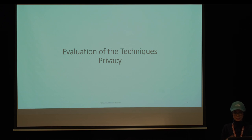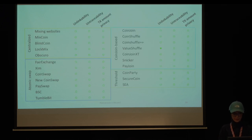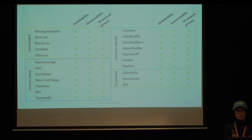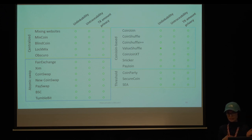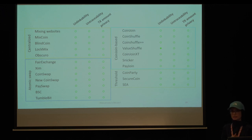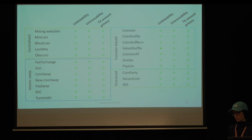We evaluated these techniques based on privacy criteria. For unlinkability, only ValueShuffle proposed something, using stealth addresses. When stealth addresses were present in Dark Wallet for Bitcoin in its earliest stage, Monero uses stealth addresses, and the good news is that they gained increased attention — Ethereum has now proposed a standard for using stealth addresses in their blockchain.